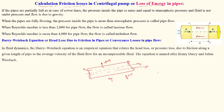Now consider the same pipe where water is fully flowing. In this condition, the pressure inside the pipe is a little bit higher than atmospheric pressure. This is called pipe flow. Here the flow takes place due to the difference in pressure.